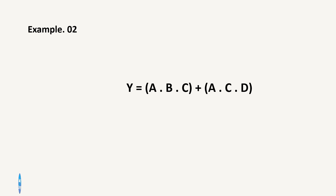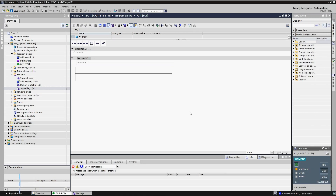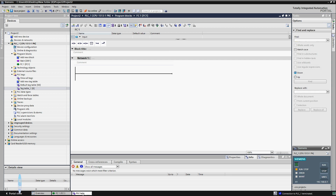Consider another example. The equation is showing that there are four inputs and one output. Output will be high if the equation fulfills the requirement. We can simplify it, but that is another topic. Here we are on beginner level, so we will deal with this equation without any simplification. Let's draw it on a programming page and try to check its behavior via live simulation.